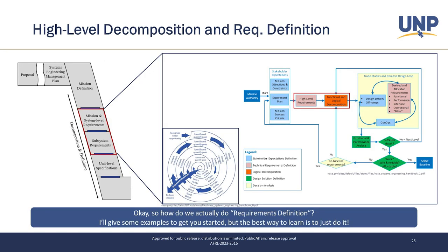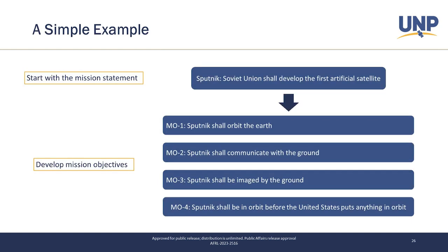How do we actually do requirements definition? We're still in that early phase, and we have to take our stakeholder expectations, experiment plan, ConOps, criteria, and objectives, and create high-level requirements. We have to do some decomposition down into lower-level things. This can be an intimidating process at first. Let's start with a very simplified example — an already pretty simple mission.